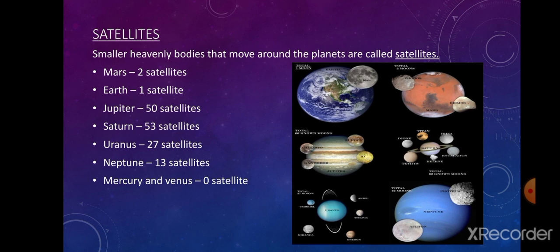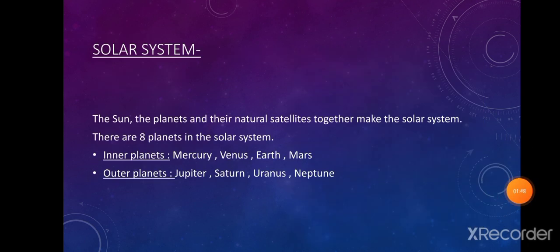What is the solar system? The sun, the planets, and all the objects that move around the planets are collectively called the solar system. The solar system is in the galaxy known as the Milky Way.